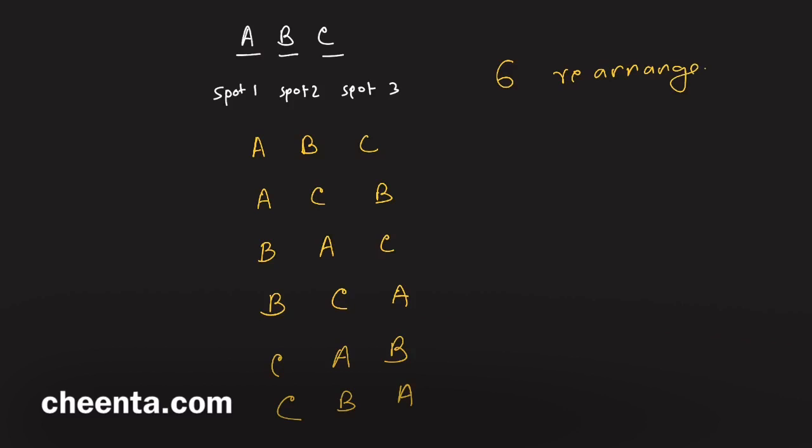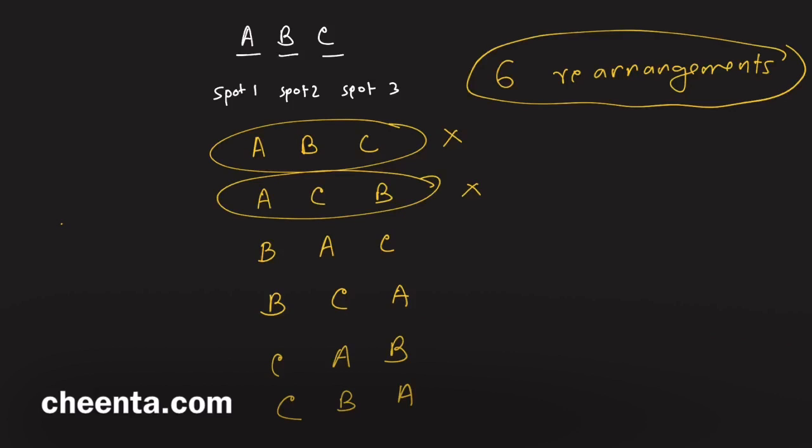The question is, how many of these are derangements? Clearly this one is not a derangement, and this one is also not a derangement because A is in its original spot. This one is a derangement because none of them are in - okay, well this one is not a derangement either because C is in its original spot, so this one is gone.